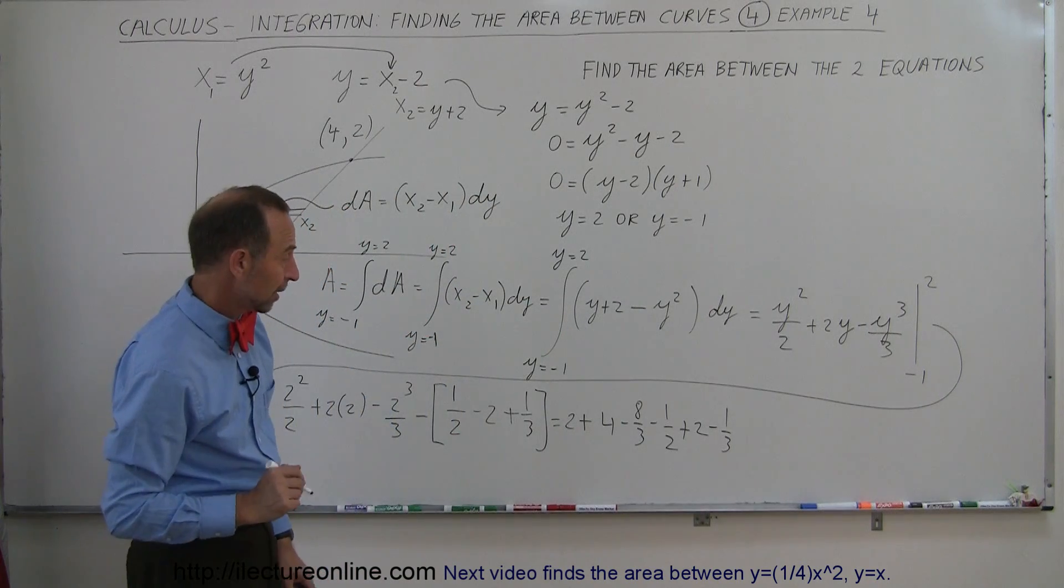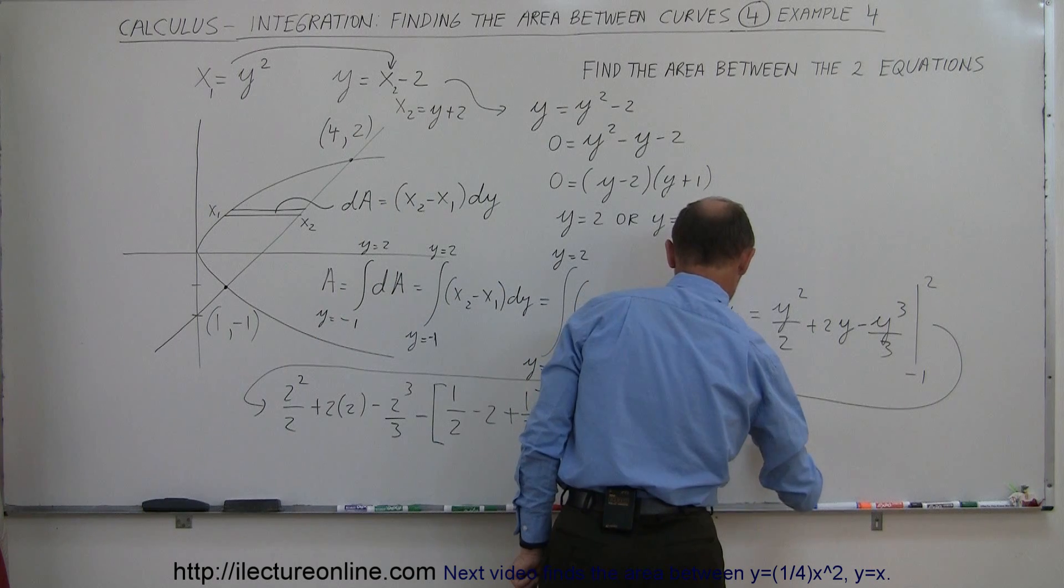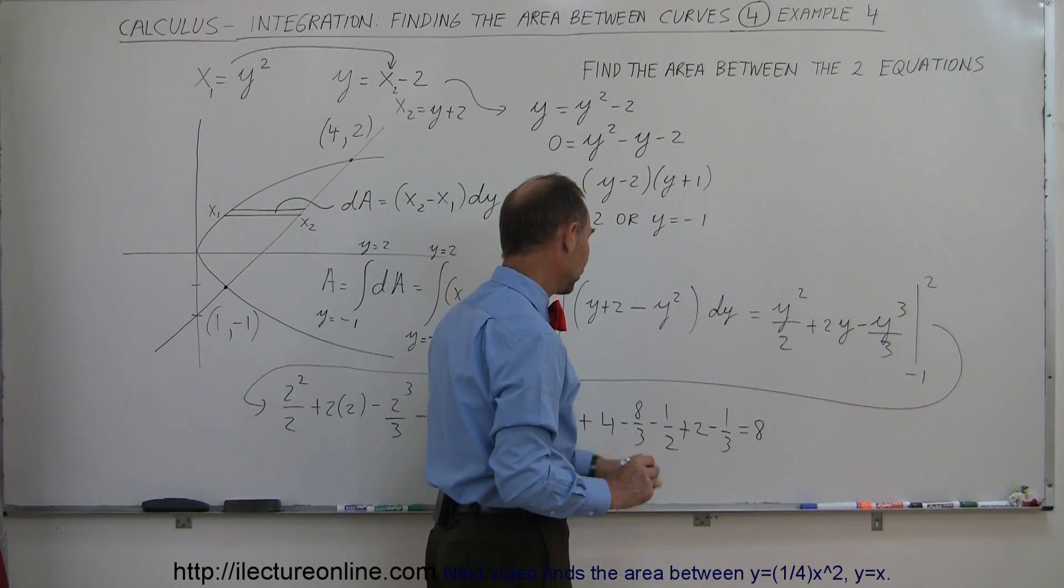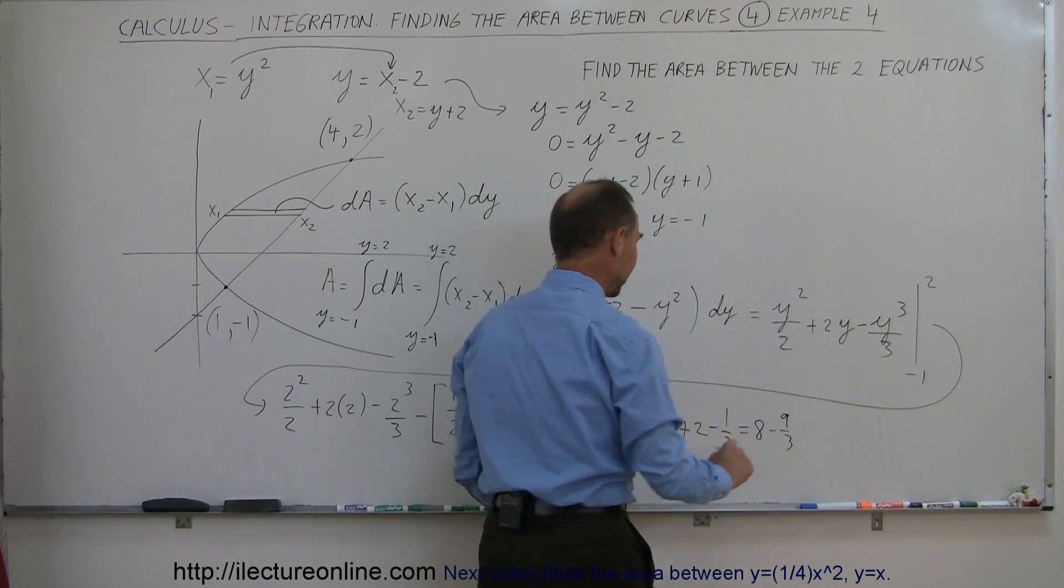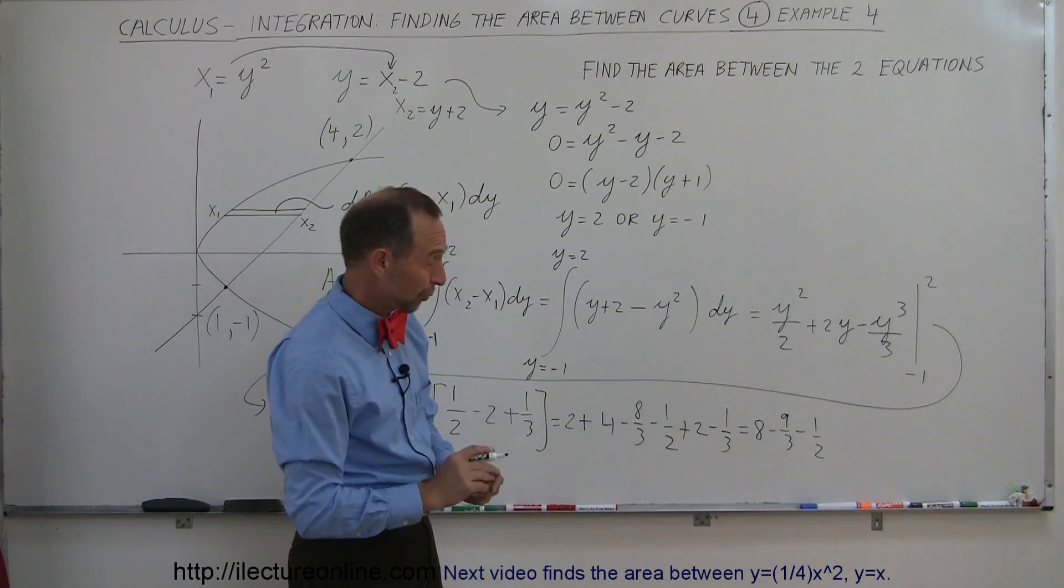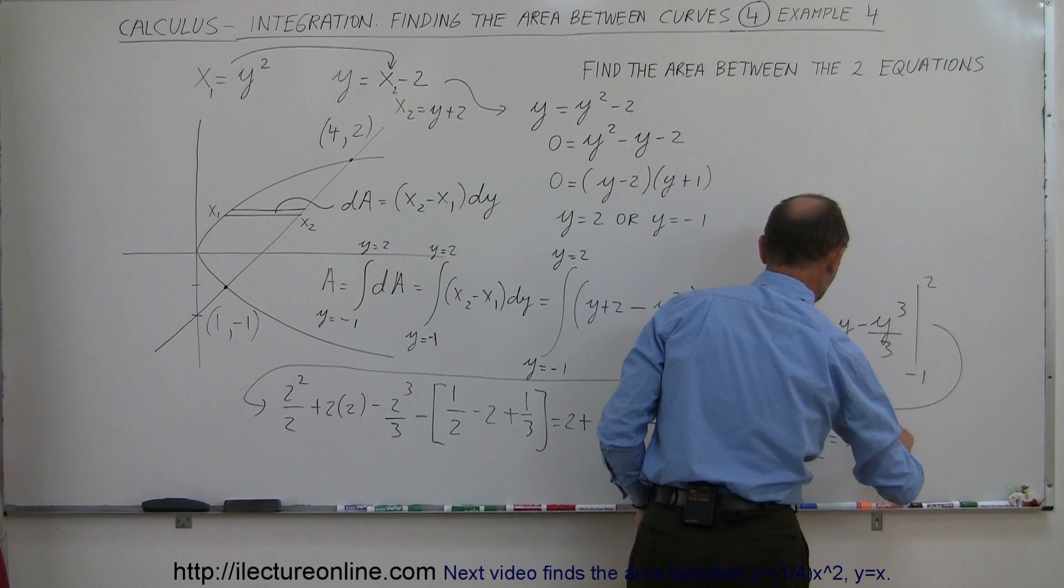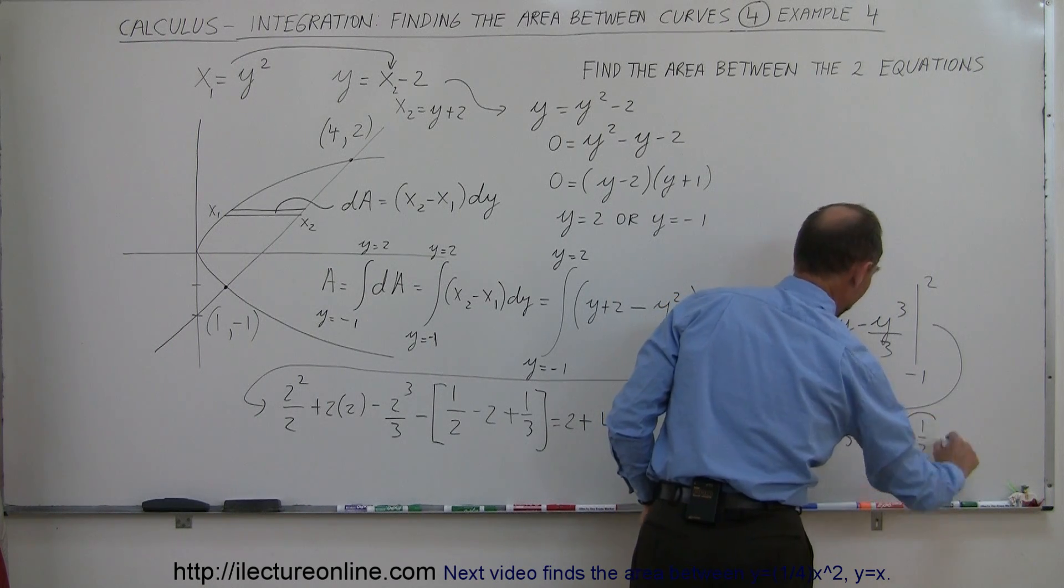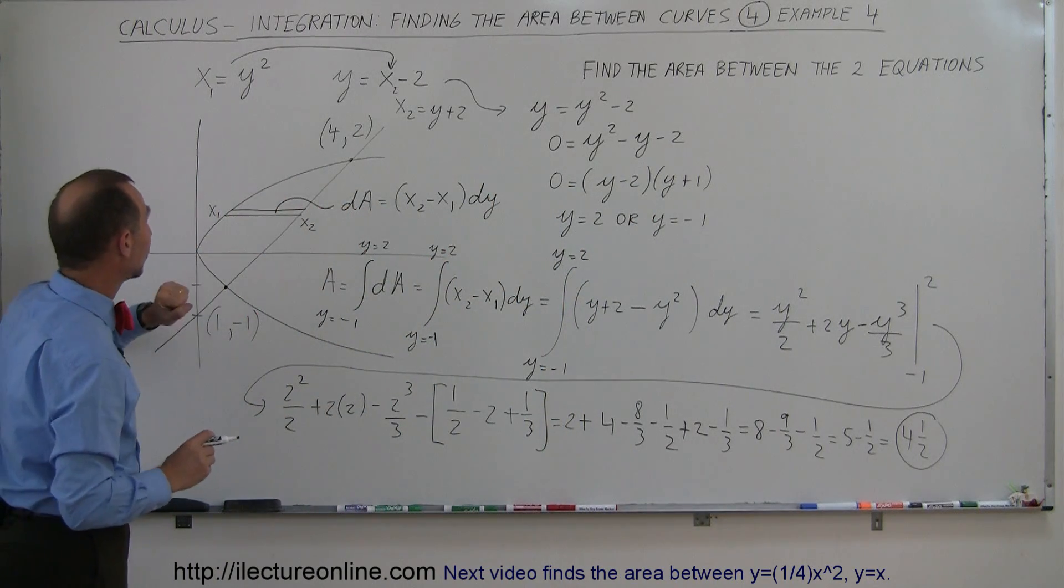Okay, we're almost there. So I have 2 plus 4 plus 2, that is 8. And minus 8 thirds, minus 1 third is minus 9 thirds. And I have minus 1 half. Of course, 9 thirds, that's equal to 3. 8 minus 3 is 5. So I get 5 minus 1 half, which is 4 and 1 half. And there's the area between those two functions, or I shouldn't say functions, between those two equations.